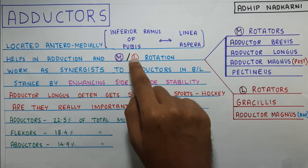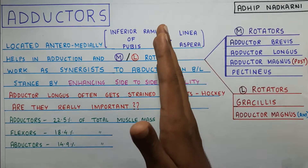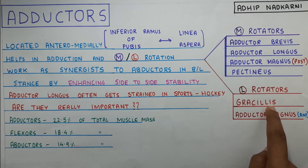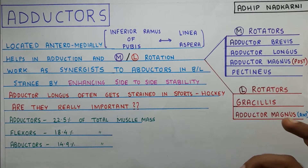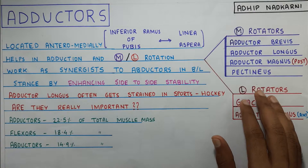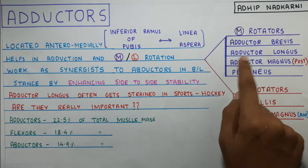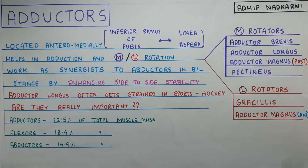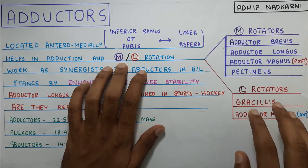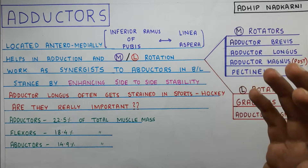The adductors obviously help in adduction, and also in medial and lateral rotation — though not all muscles help in both. Under lateral rotation you have gracilis and adductor magnus, and specifically the anterior part of the magnus helps in lateral rotation. For medial rotation, the remaining muscles — adductor brevis, adductor longus, the posterior part of adductor magnus, and pectineus — help in medial rotation. This is because more anterior muscles cause lateral rotation, whereas muscles positioned more posteriorly cause medial rotation.